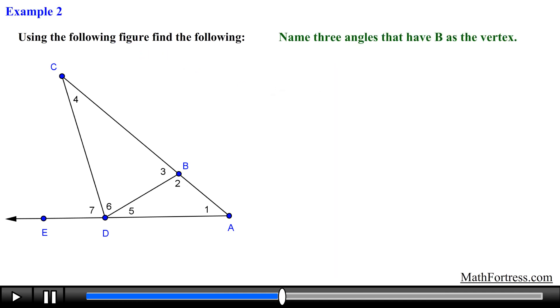Name three angles that have B as the vertex. Let's first locate point B. Point B is located right here. At first glance it seems that there are two distinct angles that have point B as the vertex.